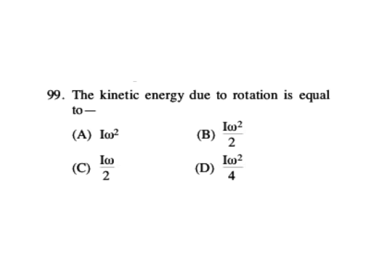The kinetic energy due to rotation is equal to half I omega square. Kinetic energy for rotation is half I omega square, and kinetic energy for translation is half mv square. So from options, half I omega square, option B is your correct answer.